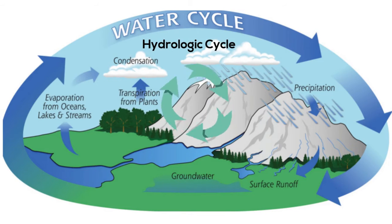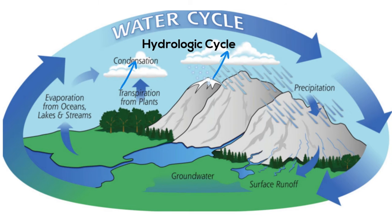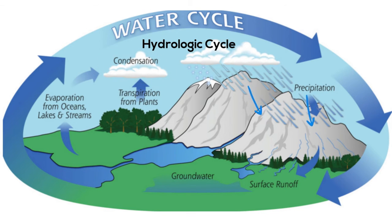The cycle starts with the evaporation of the ocean. As this moist air is lifted, it cools and water vapor condenses. It may form clouds — clouds are in fact made up of tiny water droplets and ice crystals that are so small they can float in the air. These moisture bodies in the atmosphere may be transported around the globe until they return to the surface as precipitation.